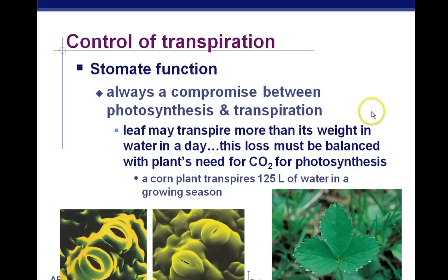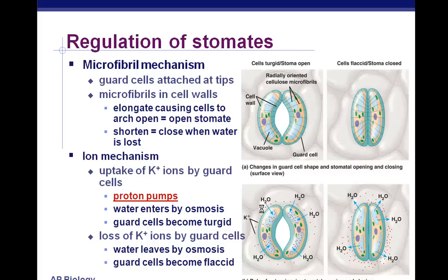A leaf may transpire more than its weight in water in a day. Plants like corn can transpire a huge amount of water — 125 liters in a growing season — which is far more than the mass of the plant. Let's talk about how the stomates work step by step.